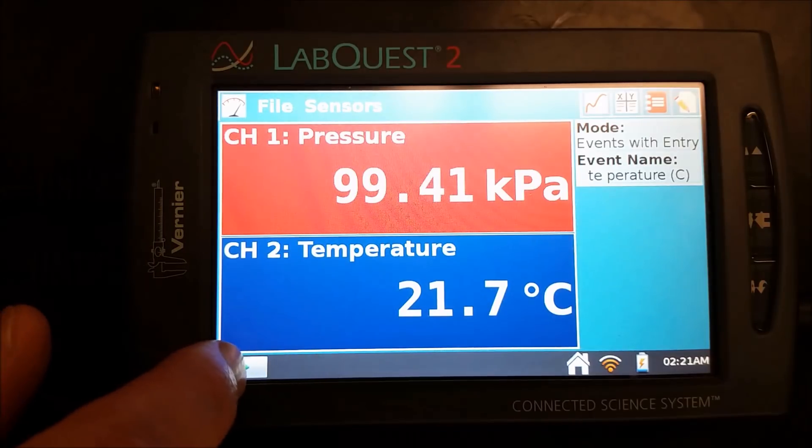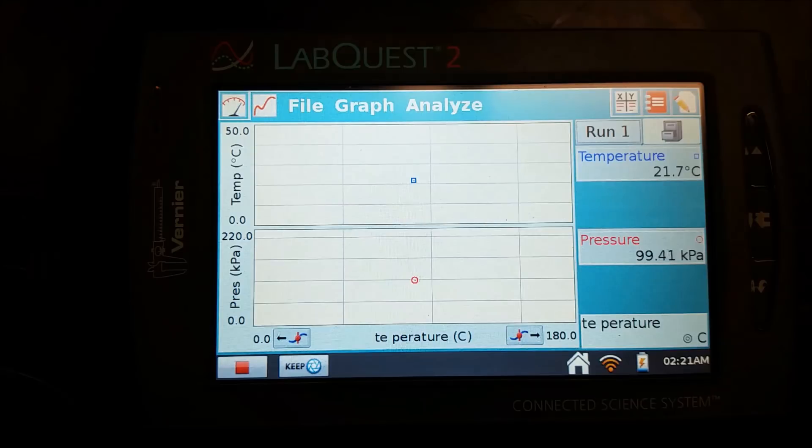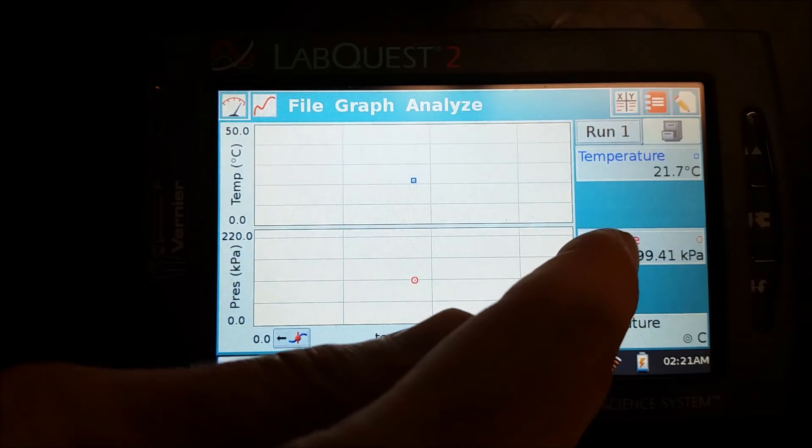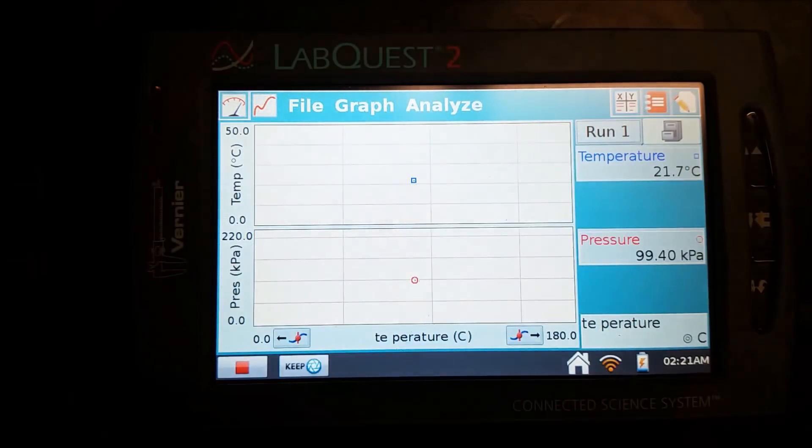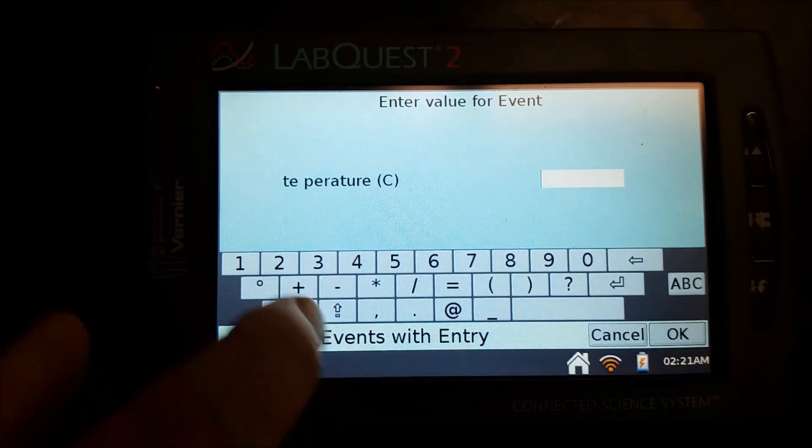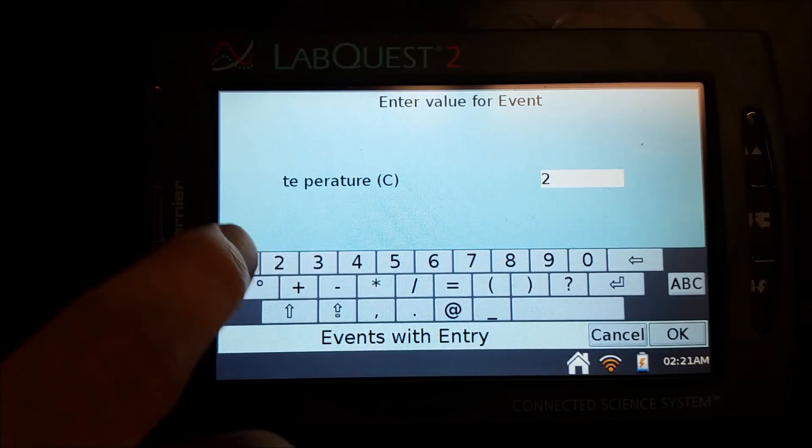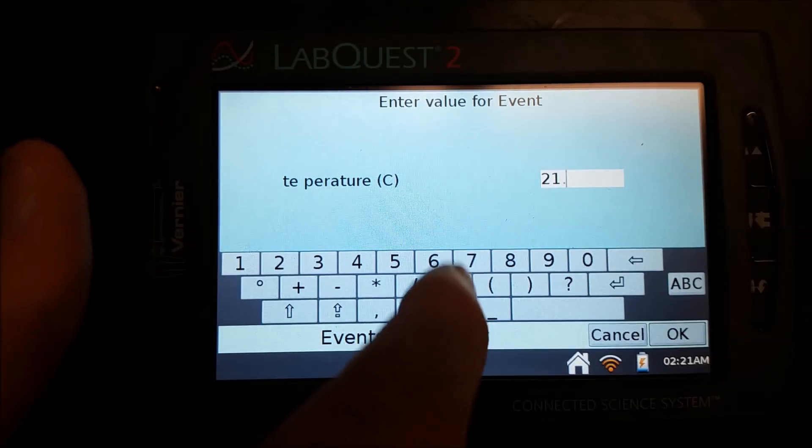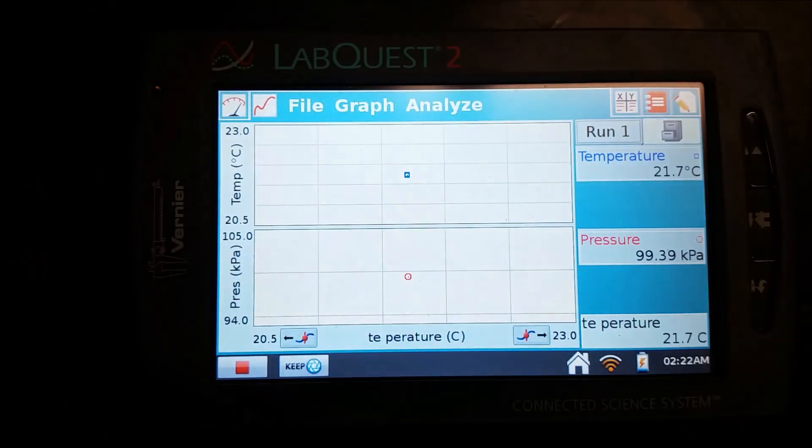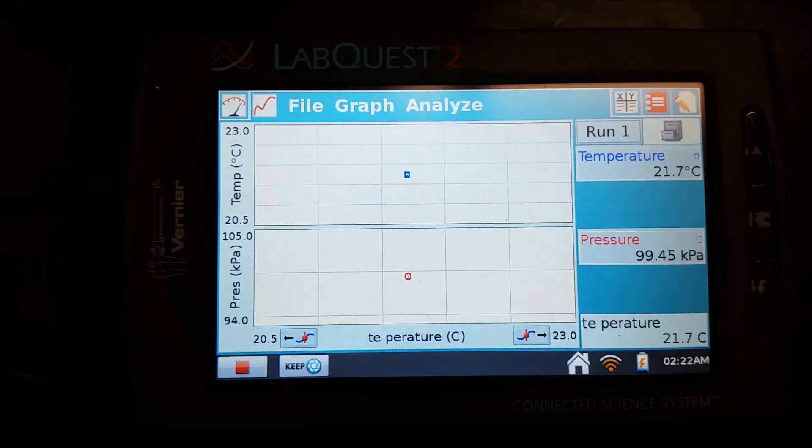And when you hit Play now, what's going to happen is it's going to create a set of points where you can get different pressures at different temperatures. So currently, this is the current pressure it's reading. This is the current temperature it's reading. If I hit Keep, I can then type in what that temperature is. So I'm going to type in the 21.7 degrees Celsius that we had, and that now recorded that as a point.